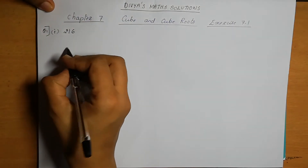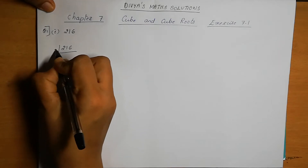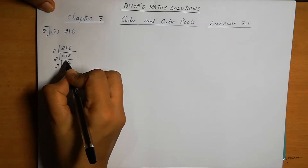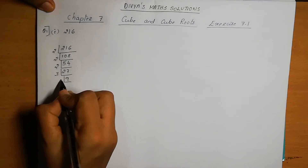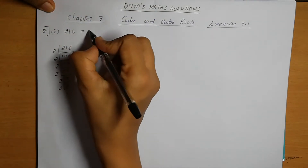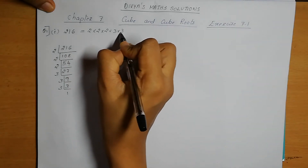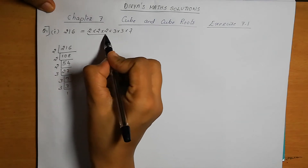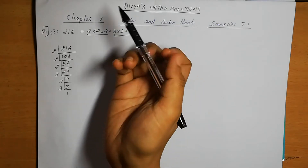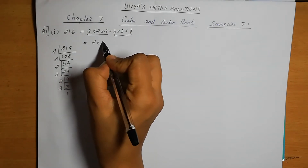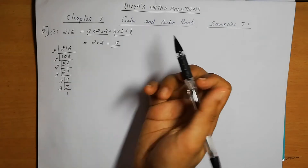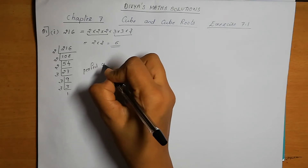The first number is 216. We take the prime factors of 216: 2 × 2 × 2 × 3 × 3 × 3. Here, the 2s form one triplet and the 3s form another triplet. All factors are in triplets. So the cube root is 2 × 3 = 6. It is clear that 216 is a perfect cube.